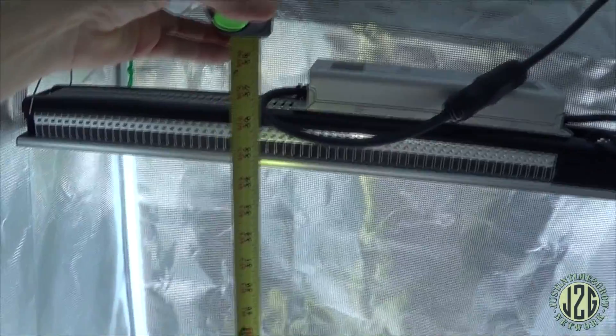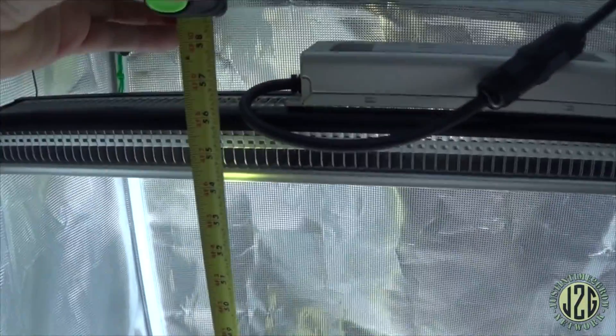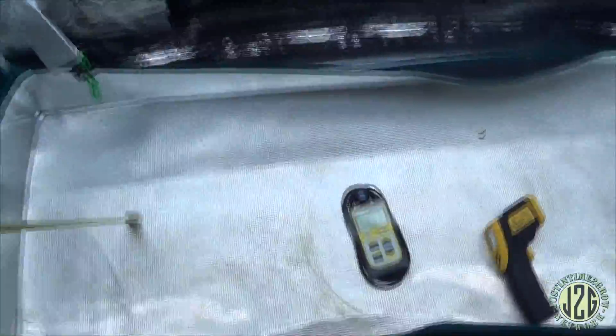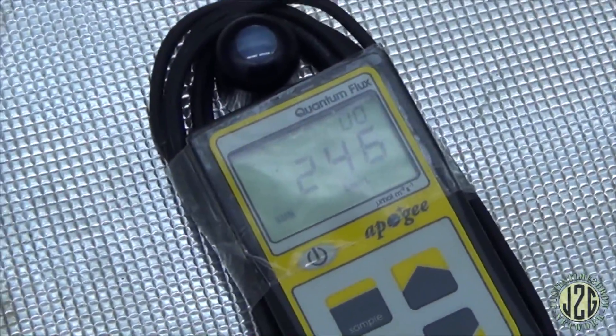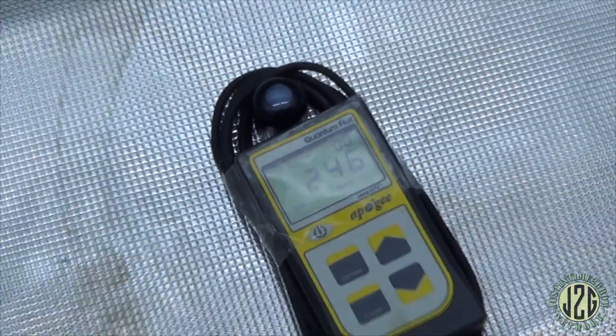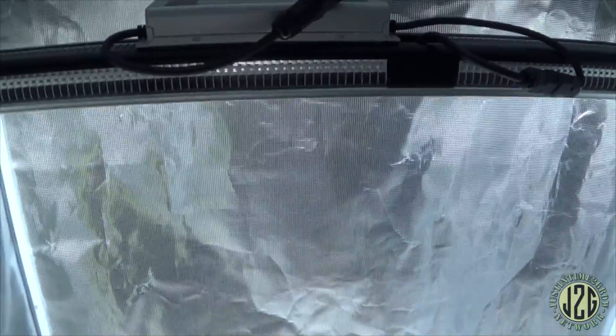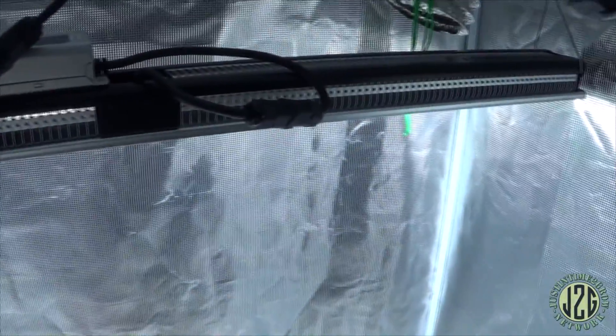One last little thing to throw in here - I'm just setting this up to put a bunch of plants in here now so I'm setting the height. I'm at about 4 and a half feet, and I'm getting 246 on the floor. That's enough to veg with man - this thing can veg at 4 and a half feet off the ground, 4 and a half feet off the canopy. That is killer, hell yeah.